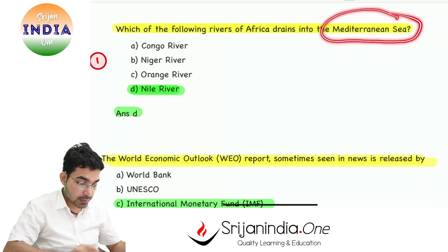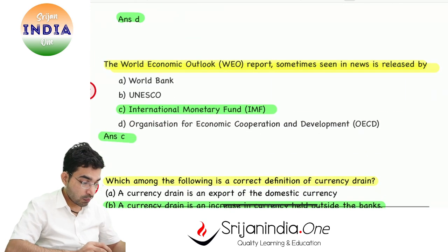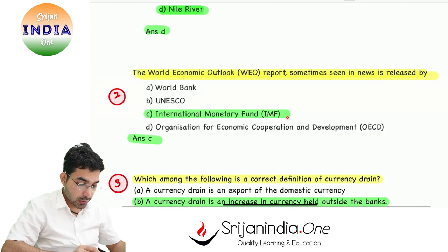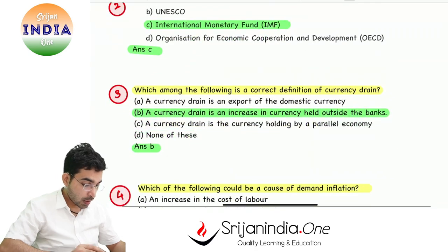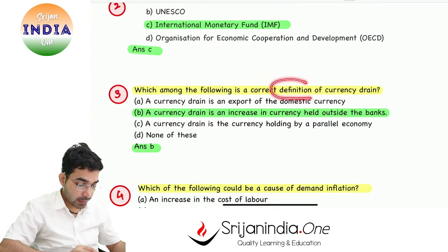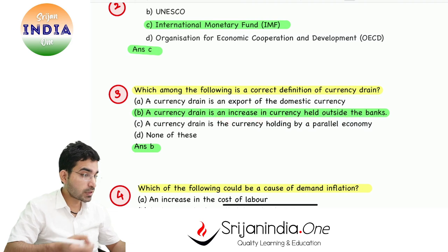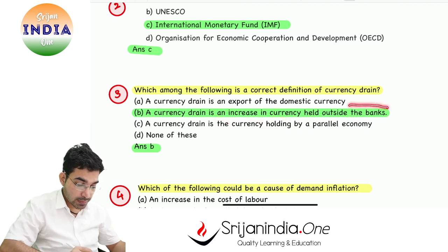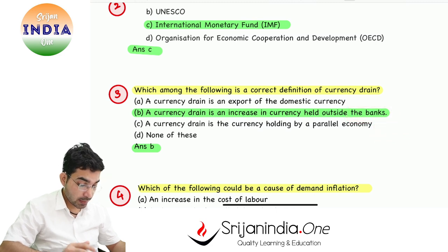Which of the following rivers of Africa drains into the Mediterranean Sea? The answer is the Nile. The World Economic Outlook report is released by the International Monetary Fund. Which among the following is the correct definition of currency drain? The answer is: a currency drain is an increase in currency held outside the banks - that currency is not in the banking system.